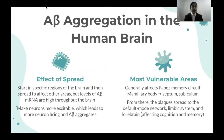The amyloid beta aggregation typically starts in the subiculum region of the brain, which affects memory. This excites the neurons, which has been found to give positive feedback thereby elevating amyloid beta aggregation. This impairs synaptic transmission and thus neurons lose connection with other neurons. Slowly, amyloid beta aggregation spreads to the cerebral cortex, which is responsible for cognition and social behavior.